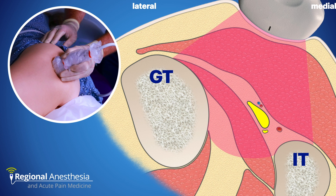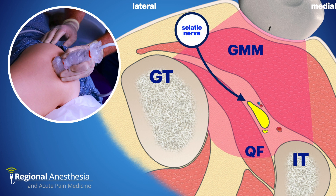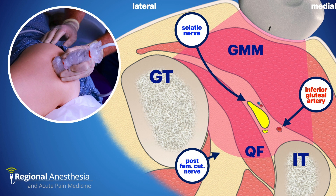With a curvilinear probe placed over the trough, we'll be able to see the greater trochanter, the ischial tuberosity, and the gluteus maximus and quadratus femoris muscles. In the plane between the two muscles lies the sciatic nerve, usually somewhat closer to the tuberosity side. Close to this is the inferior gluteal artery, which is a good landmark in cases where the imaging is less than ideal. Note that the posterior cutaneous nerve of the thigh, which is not a branch of the sciatic, runs quite close here and may or may not be blocked with the same sciatic injection — we'll talk more about that later.